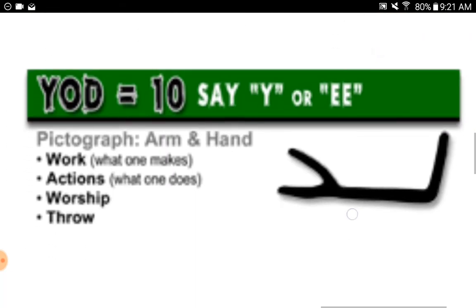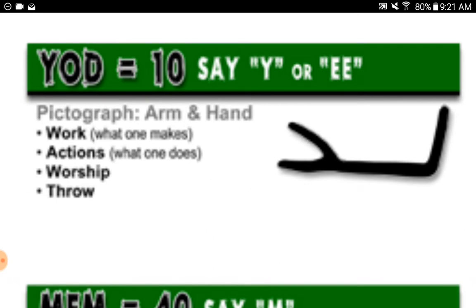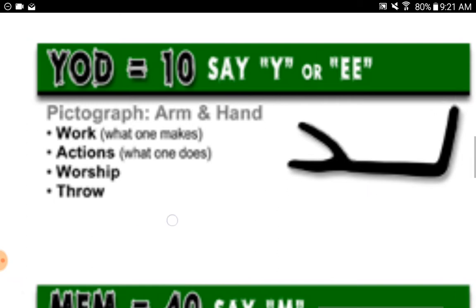Yod equals ten, say 'Heh,' 'Ye,' or 'Yi.' Pictograph: arm and hand. Work, what one makes, actions, what one does. Worship. Throw.